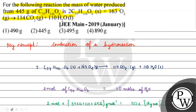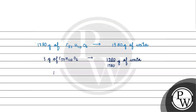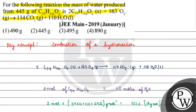If we have 445 grams of C57H110O6, it gives (1,980 / 1,780) × 445 grams of water, which equals 495 grams of water. Coming back to the question, the correct answer is option 3 — 495 grams of water. I hope you understood it well. Thank you and all the best.